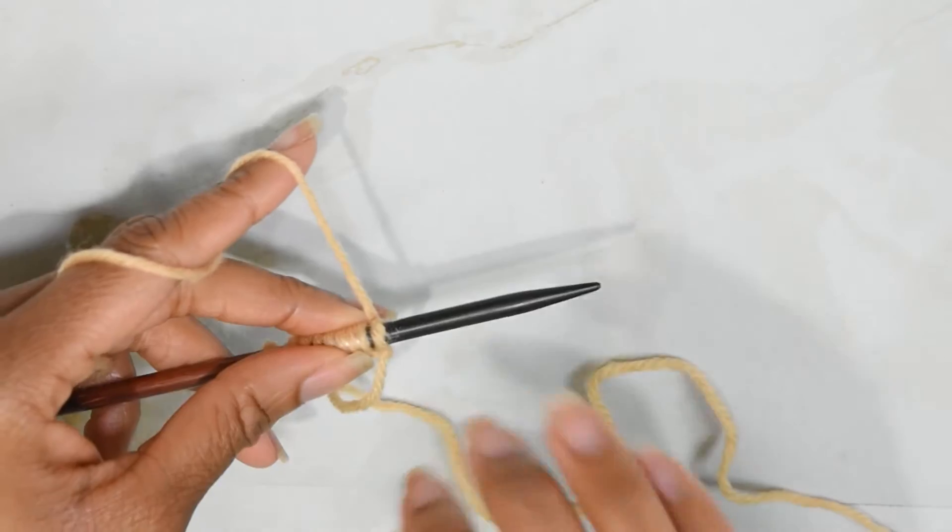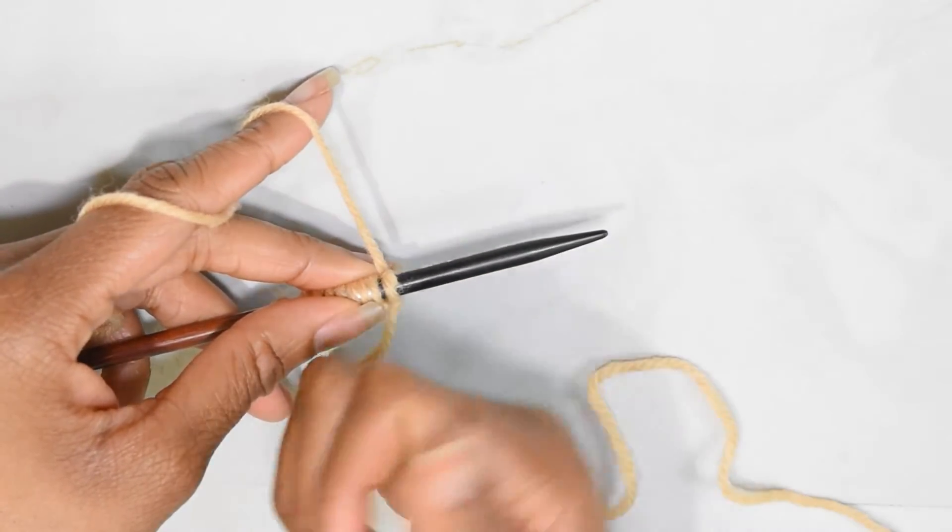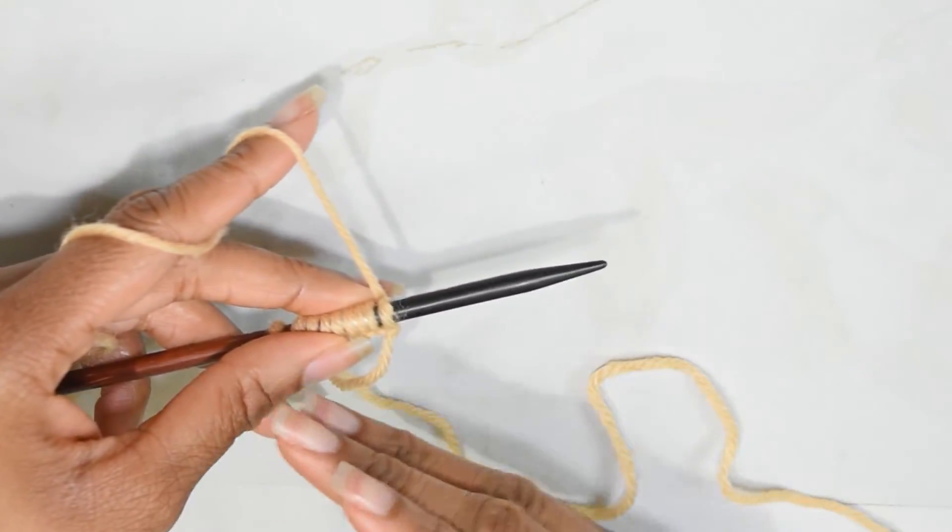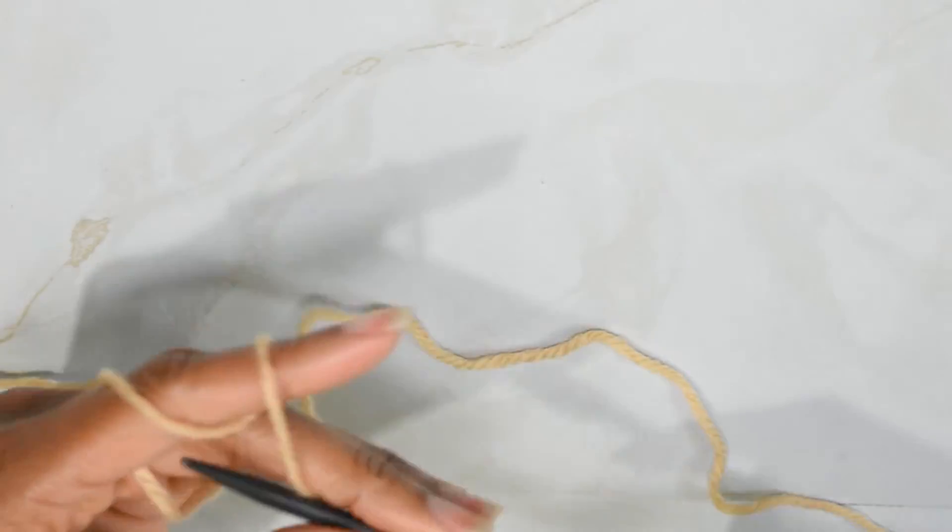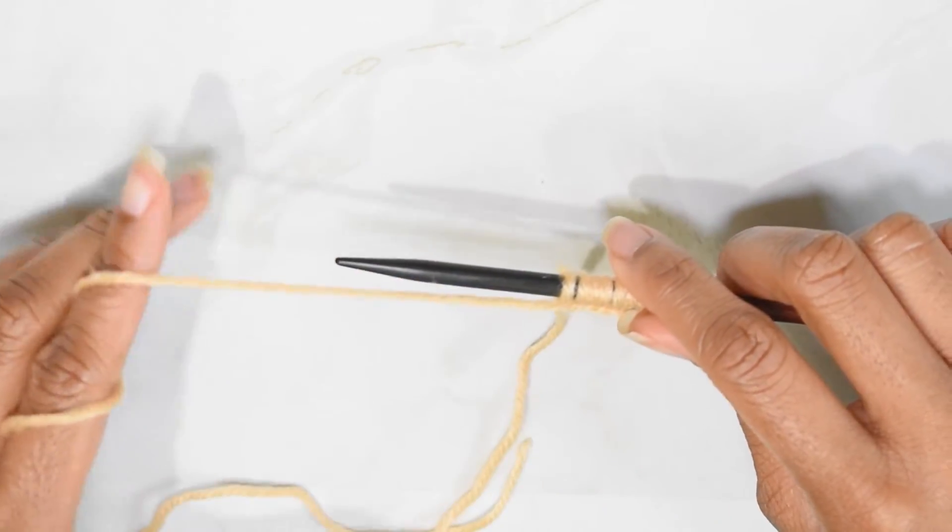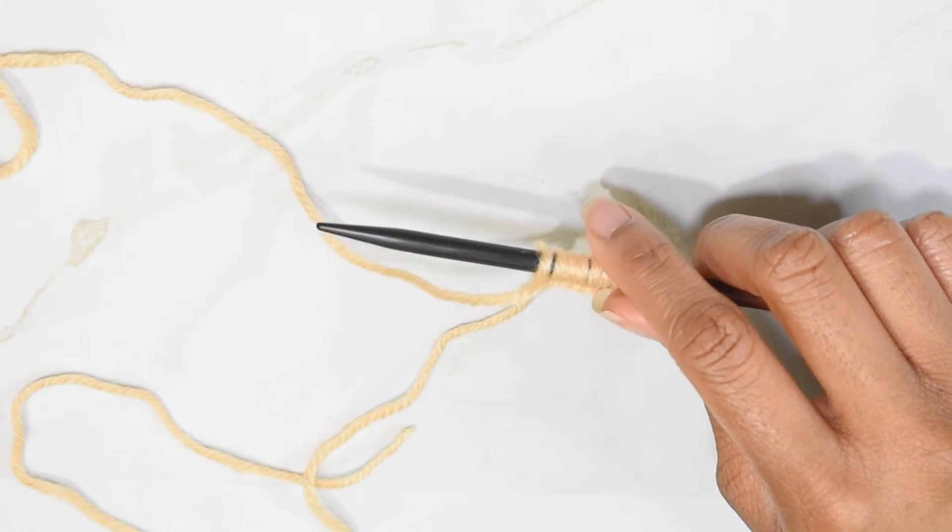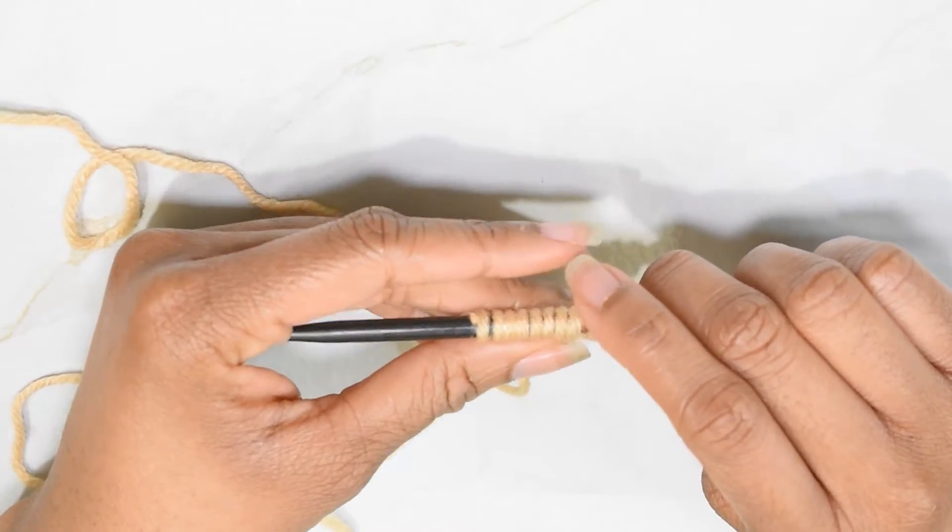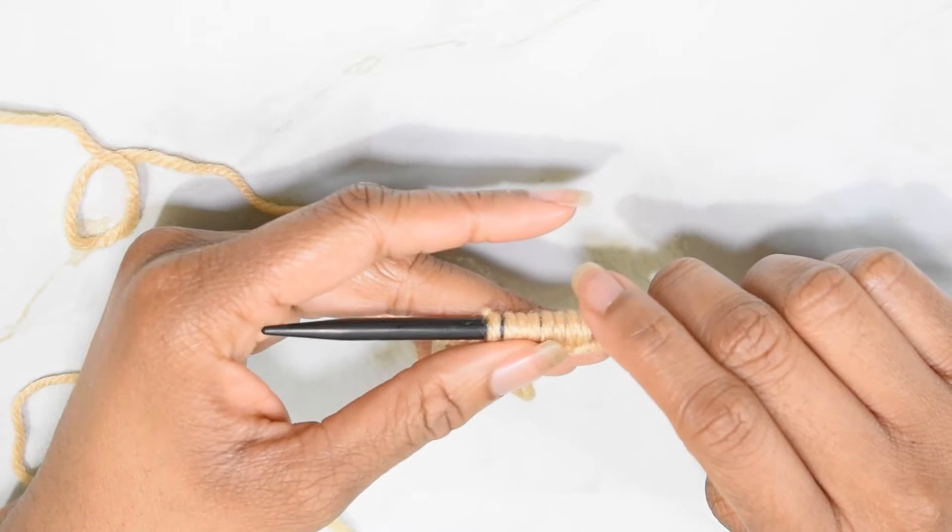So I know if my yarn is pointing this way or to the right, I'm on the wrong side of my work. Or if I'm on the right side, my tail is kind of pointing to the left and I'm on the correct side or the right side of my work. So that's just something that I kind of noticed.